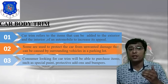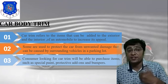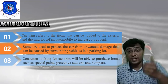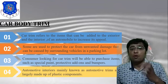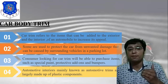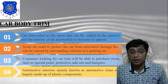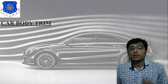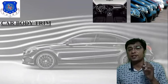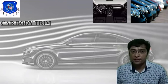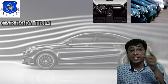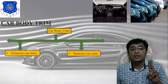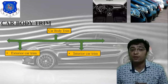Consumers looking for car trim can purchase items such as special paint, protective add-ons, and bumpers — important for reducing accidents or damage. Automotive interior trim is largely made of plastic components. There are mainly two types of car trim: exterior car trim and interior car trim.